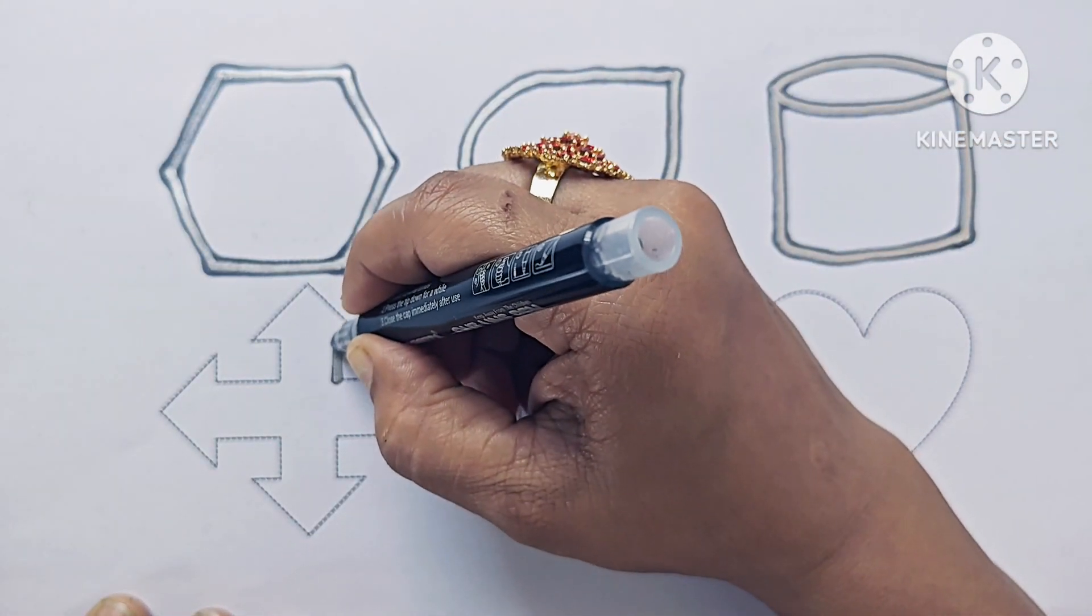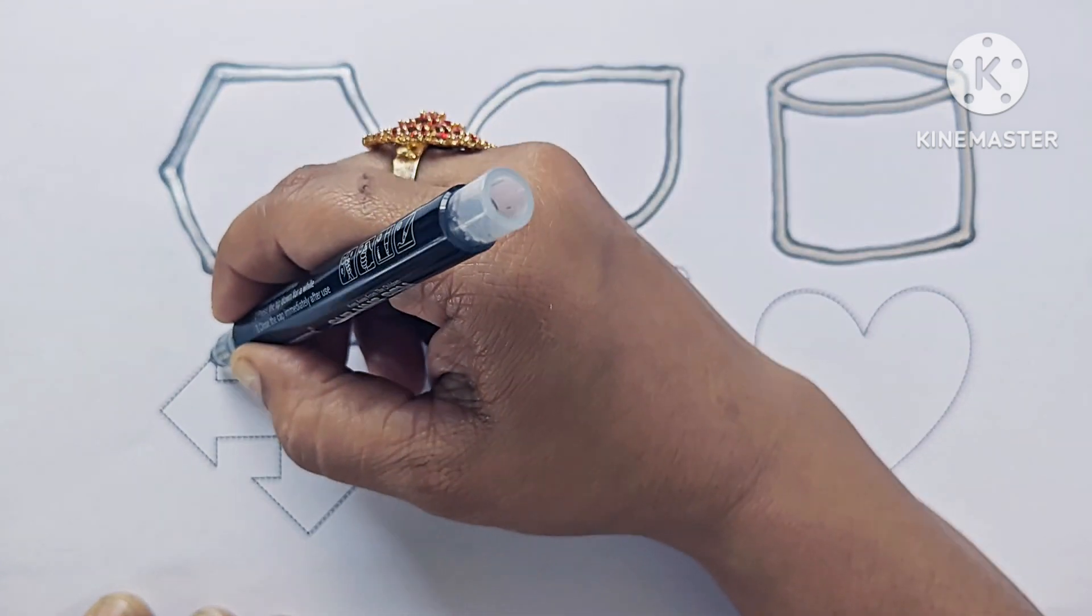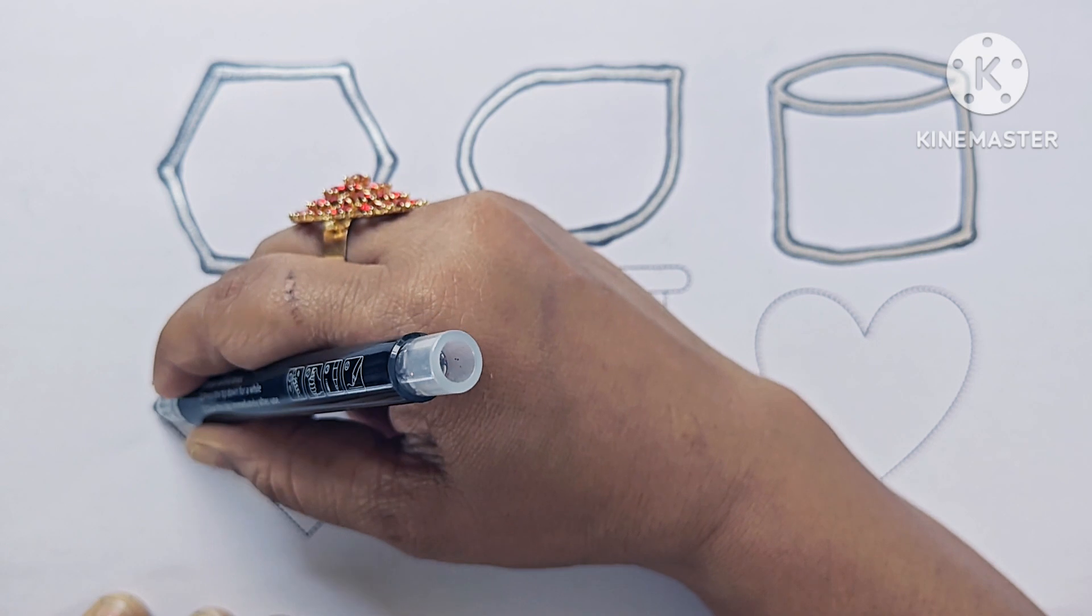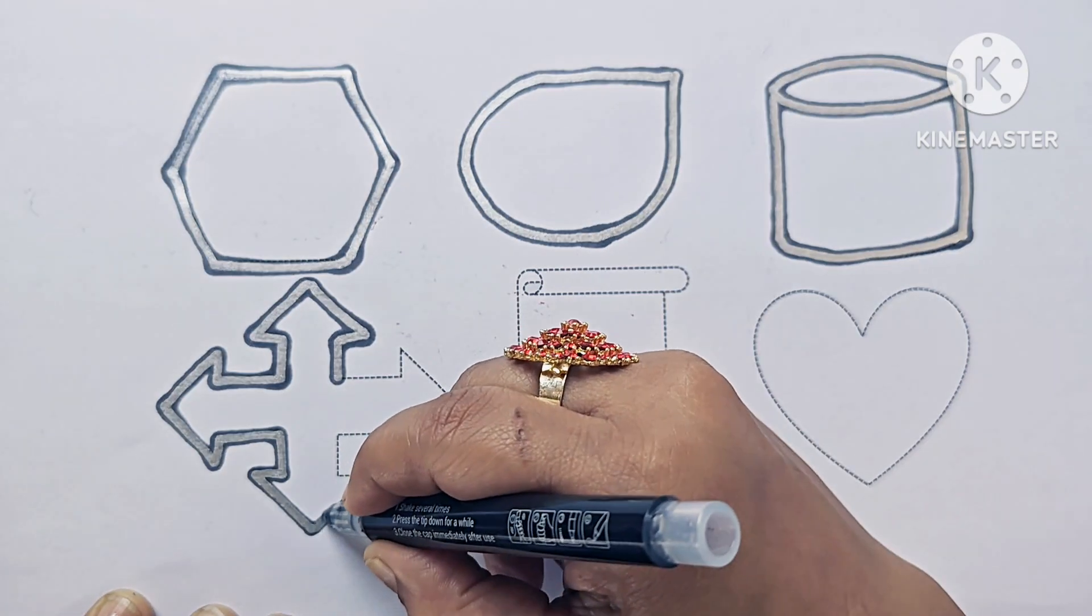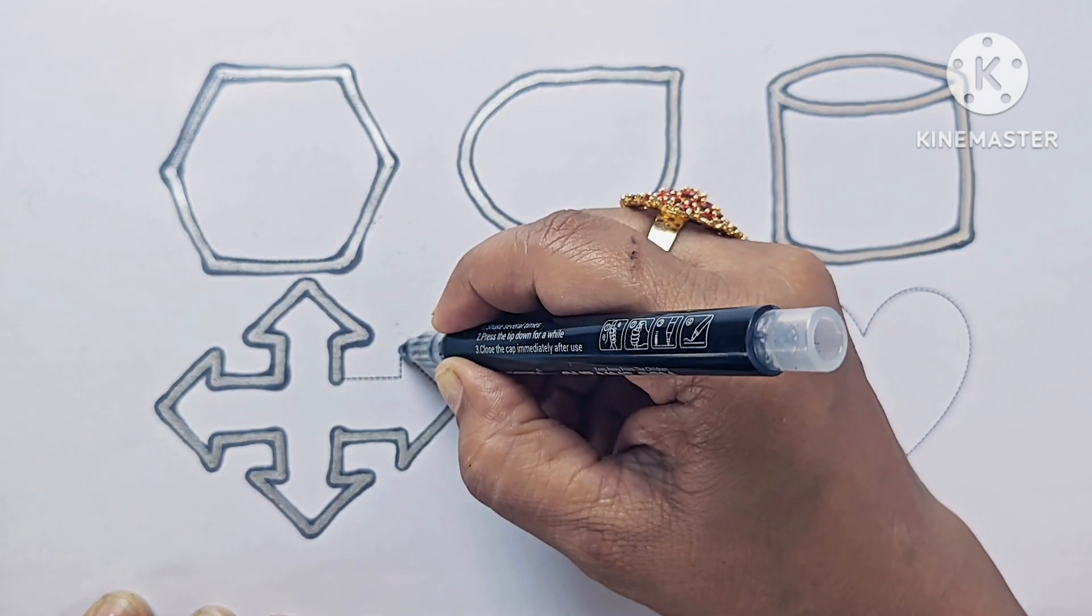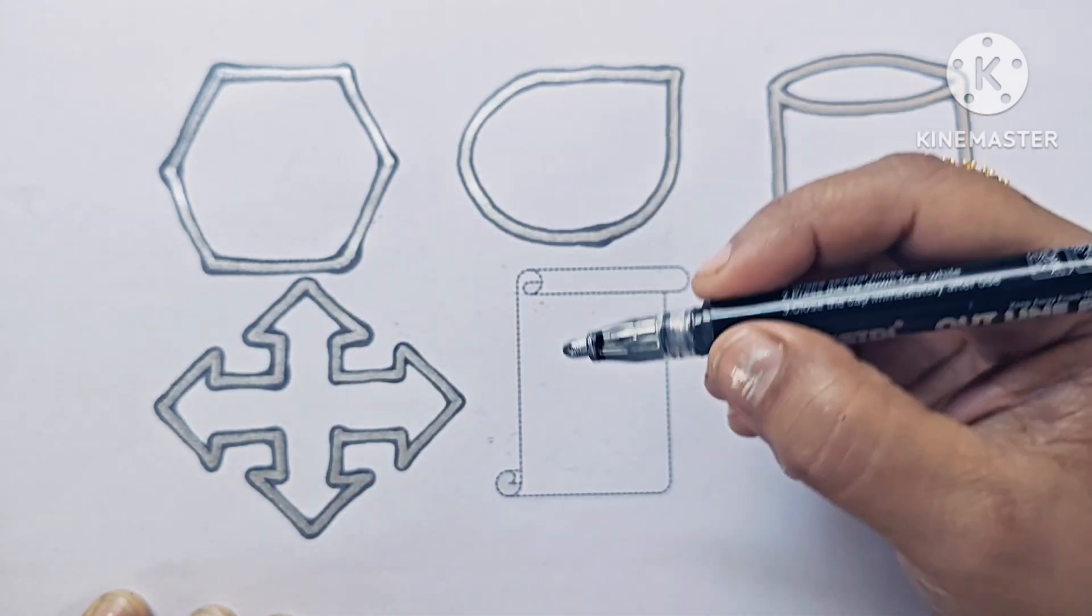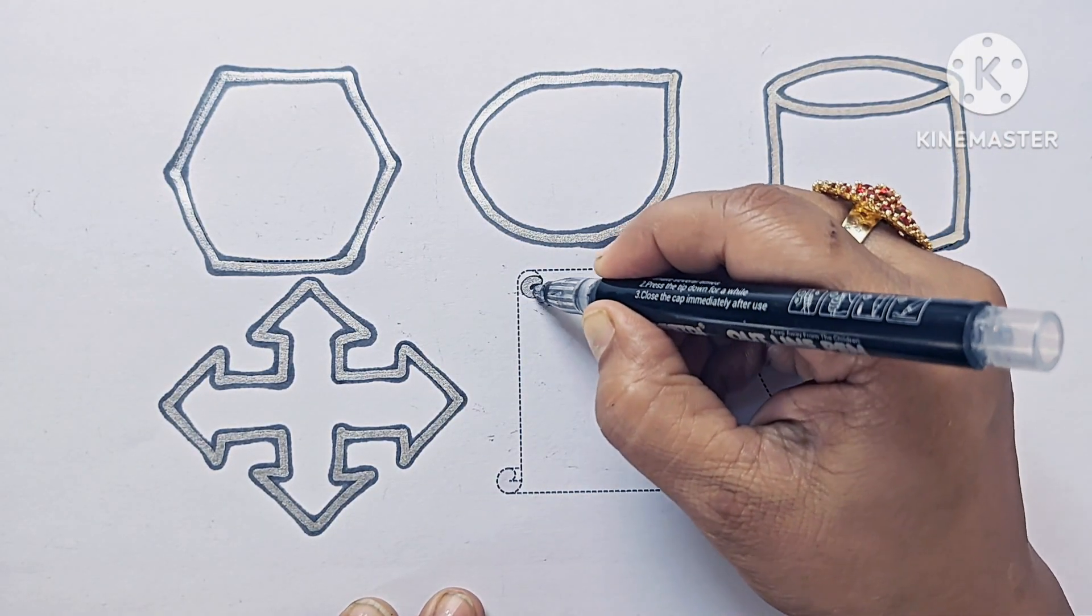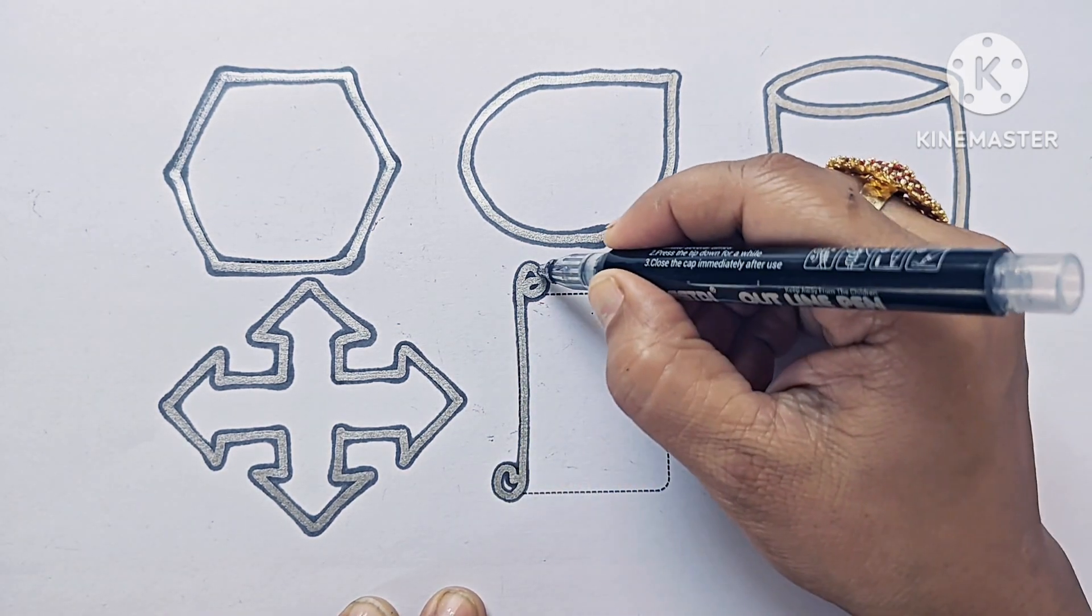This is Quad Arrow. This is a symbol, Quad Arrow. Or you can say left, right, up, down arrow. This is Vertical Scroll.